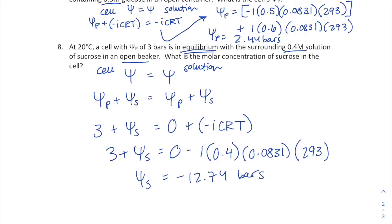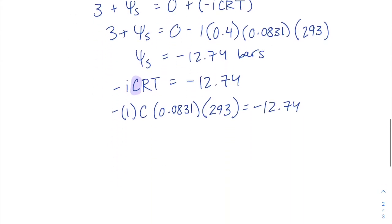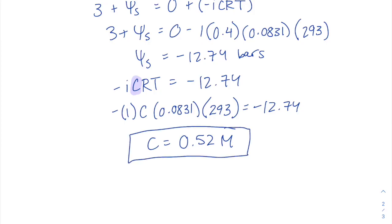They ask for the molar concentration of sucrose in the cell. Using solute potential equals negative iCRT and solving for C: i equals one for sucrose, R is our constant, temperature is 20 degrees Celsius plus 273 equals 293 K, and solute potential is negative 12.74. Solving gives C equals 0.52 molar or moles per liter. That's how to solve a range of water potential problems.